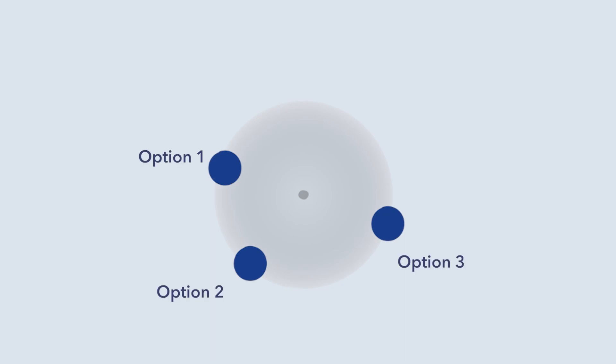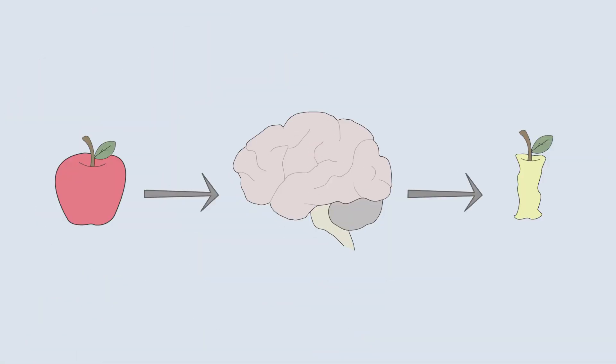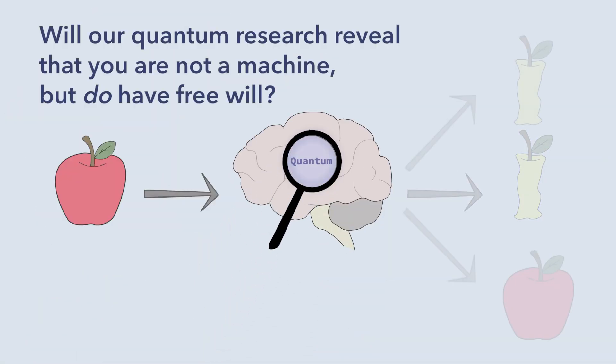Our research investigates if you can freely choose from those options, which ultimately influence large-scale events, such as eating the apple or not. So, will our research reveal that you are not a machine and you do have free will?